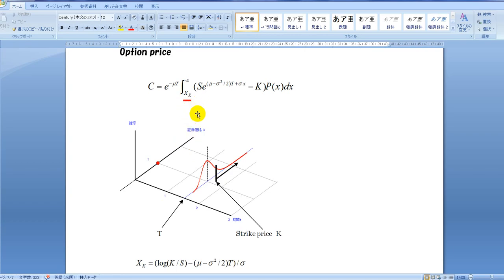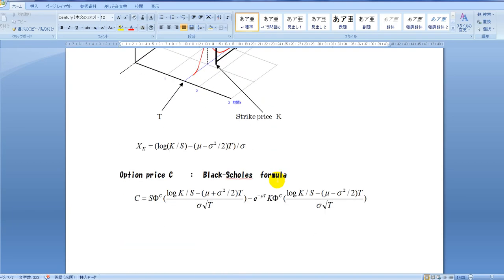Option price C is the expression of the merit which is expressed as follows. Where xk means the strike price K measured by the standard deviation of p(X). C is the expectation of the merit when the final price is in this zone. The option price C is calculated like this. This is the Black-Scholes formula.